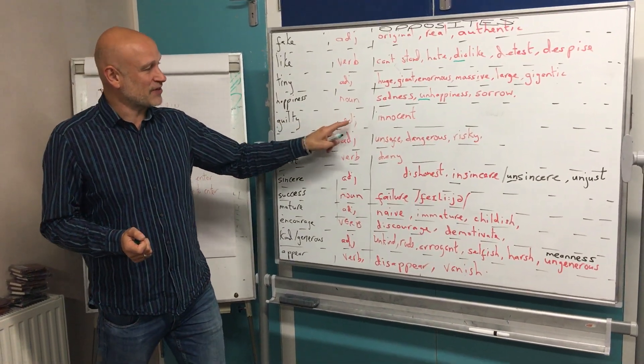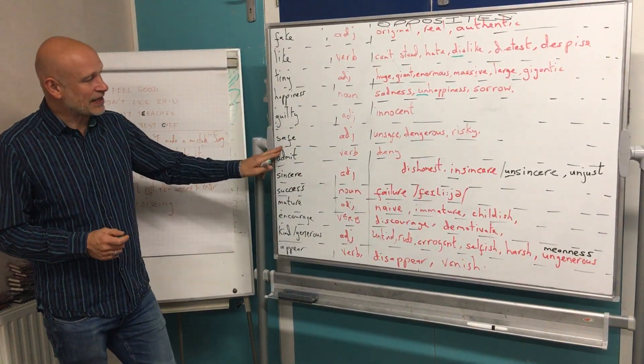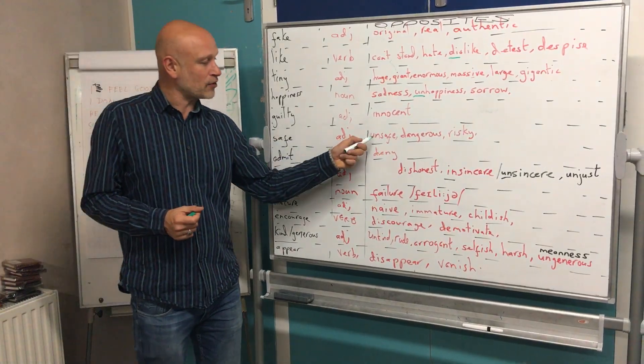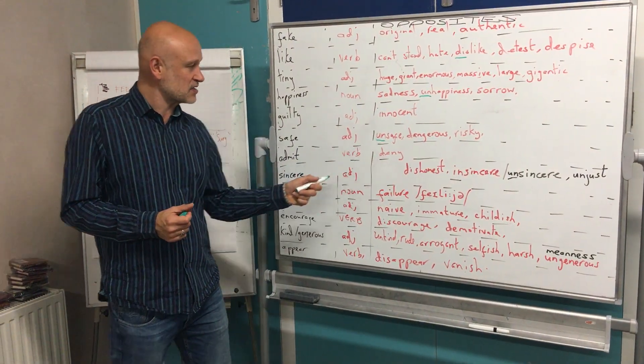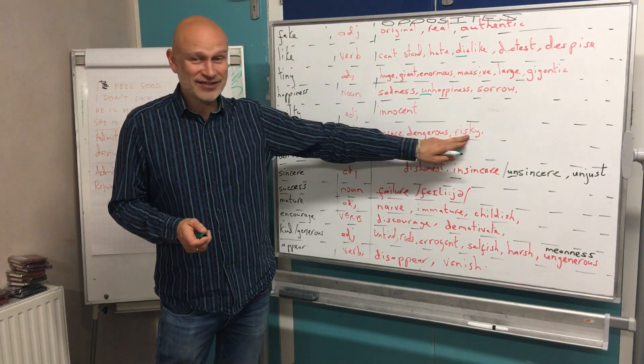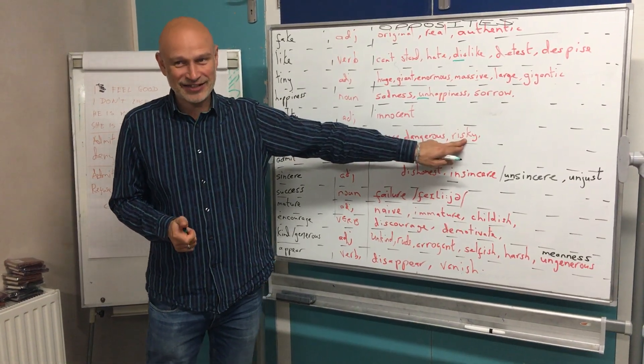Guilty is an adjective. The opposite is innocent. Safe is an adjective. Well done for the prefix: unsafe. Dangerous. And I really like this one. Thank you. Risky. Great word.